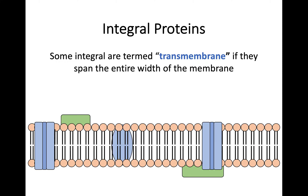There's one other term we use to describe them. Like in the diagram that you can see right here, if you have an integral protein that is spanning across the whole membrane from one end to the other, they can be termed transmembrane, meaning across the membrane. And these are going to be really useful when you look at how molecules can move from one side to the other.